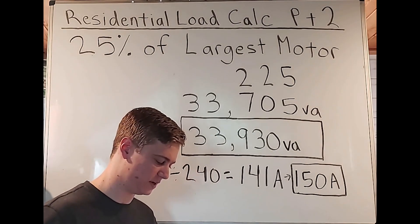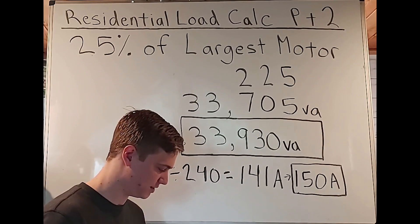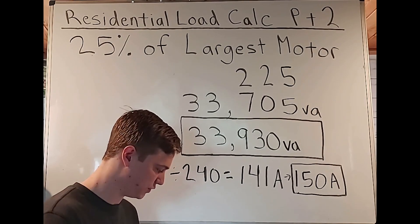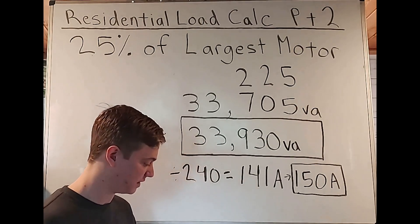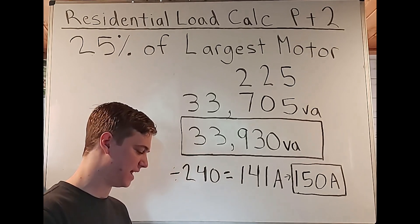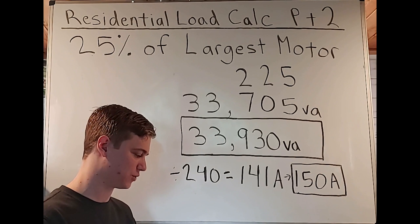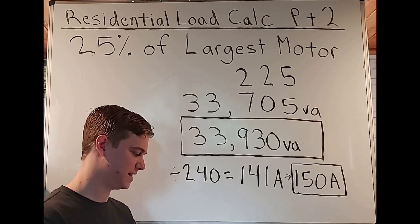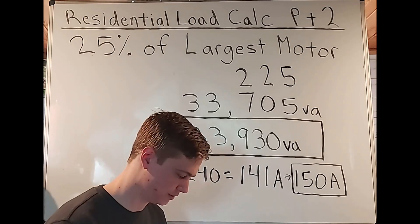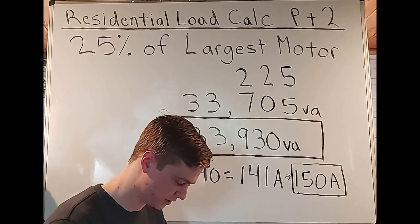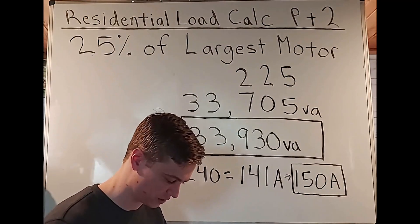Looking at article 310.12B feeders. We see this talks about a feeder rated 100 amps to 400 amps. We see it mentions that the conductors that supply the one family, two family or multifamily dwelling shall be permitted to have an ampacity that is not less than 83% of the rating. And in most cases, you're just going to be using table 310.12 because that shall be permitted to be applied if there are no adjustment or correction factors.